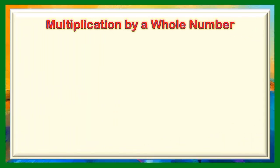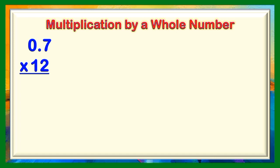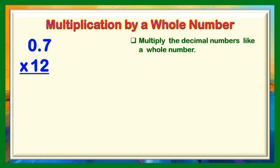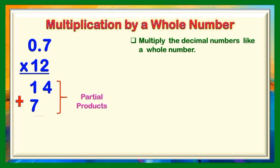Let us have another example in multiplication by a whole number. Let's have this number sentence: 0 and 7 tenths multiplied by 12. The first step in multiplication of decimals is to multiply the decimal numbers like a whole number. So let us multiply: 2 times 7, that will give us 14. 1 times 7, that will give us 7. 14 and 7 here are what we call the partial products. We're going to add these and we will get the answer of 84. But wait, children, this is not yet the final answer because we need to follow the second step.